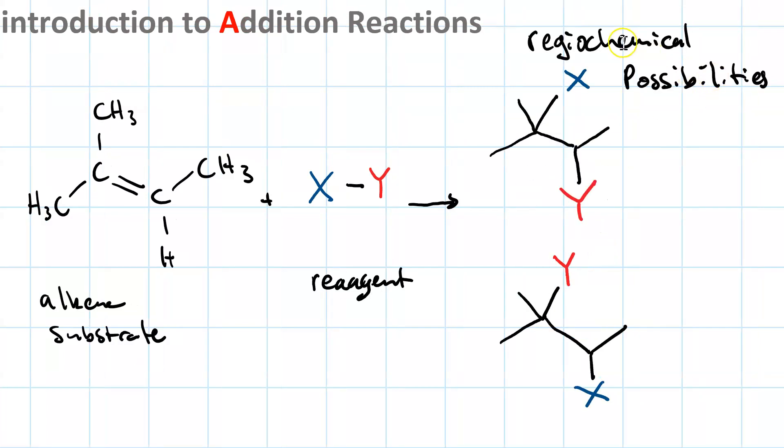In addition to these regiochemical possibilities, which of the two sp2 carbons does each component of the reagent end up on, we also have stereochemical possibilities, two of them, either syn or anti.